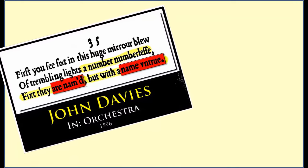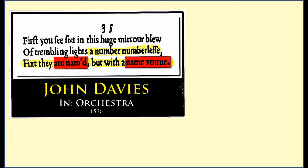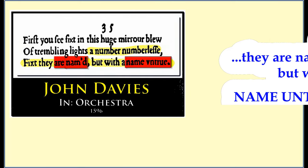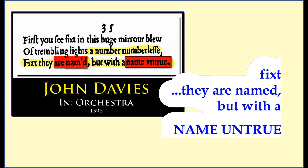In one poem, Davis writes: 'first, you see fixed in this huge mirror blue of trembling lights, a number numberless. Fixed they are named, but with a name untrue.' It's as if he's talking about the illusion of fame and how names can be deceptive — even untrue. It totally connects back to the idea of a pseudonym: a name that everyone knows, but that doesn't reveal the real person behind it.